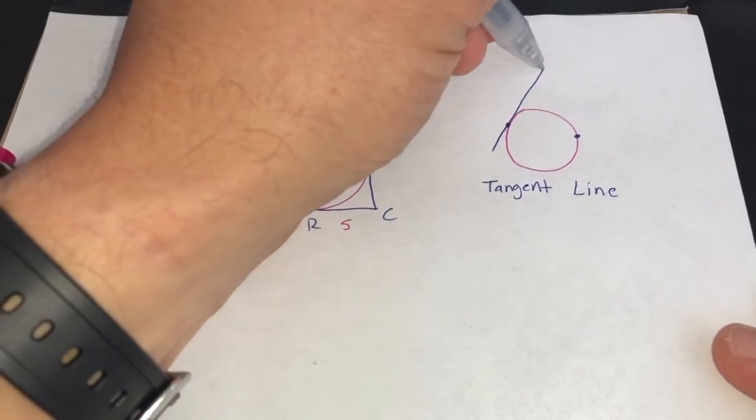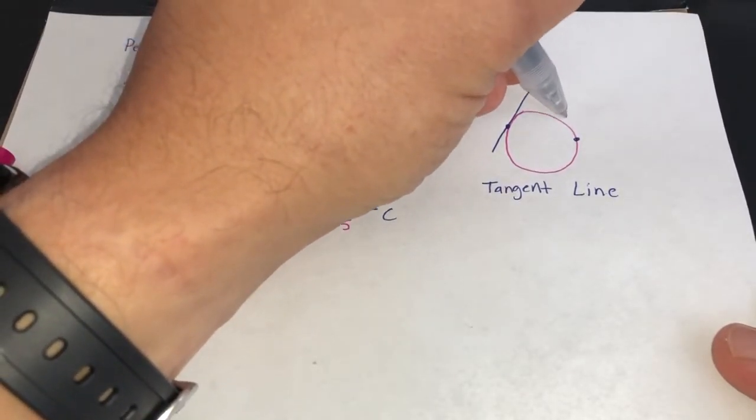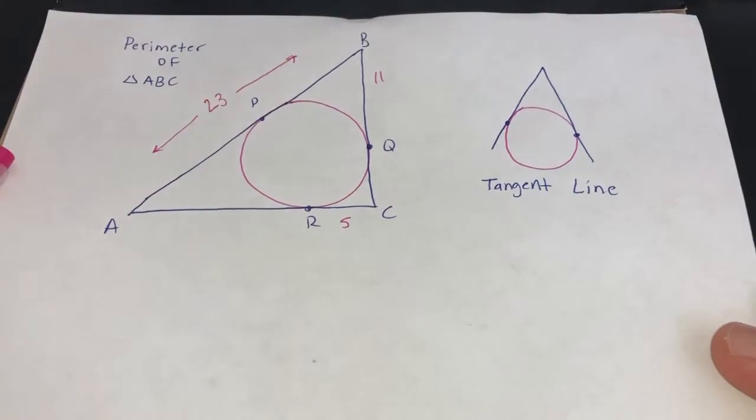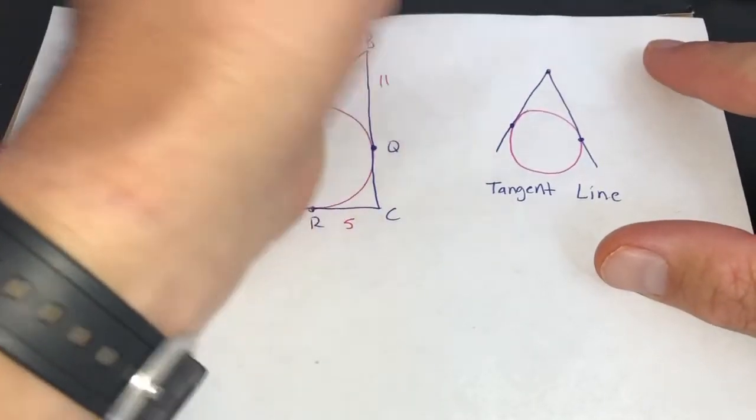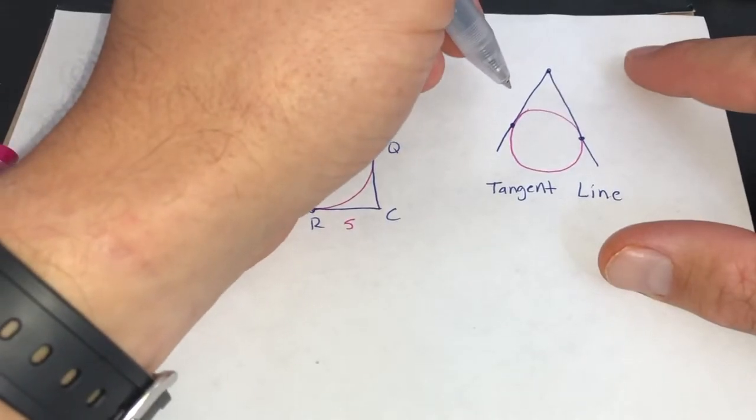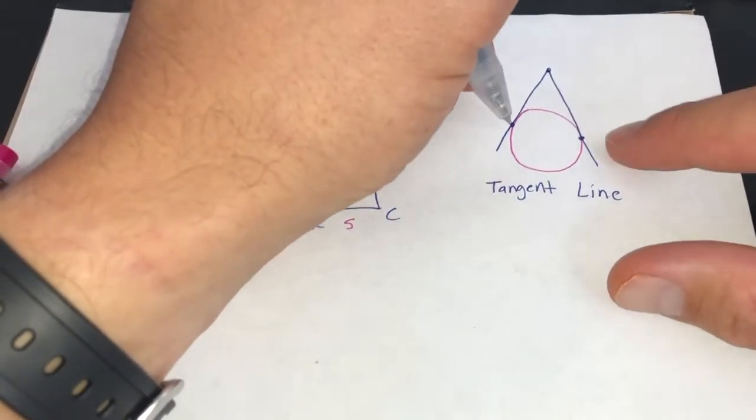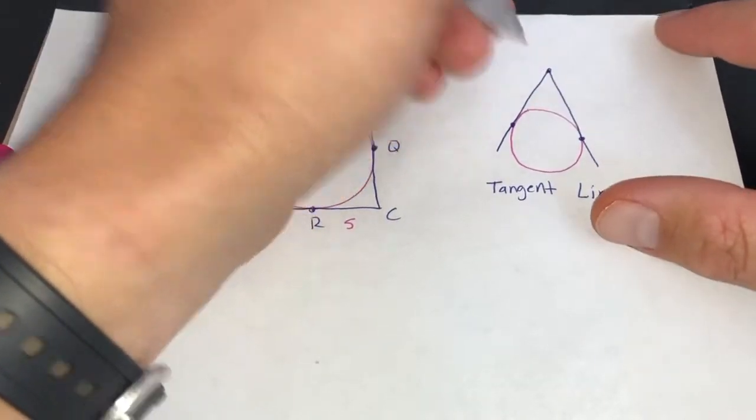Well, if I had another tangent line and both of those tangent lines meet right here, there's a rule, a theorem in geometry, that says two tangent lines that meet at the same point are of the same length.